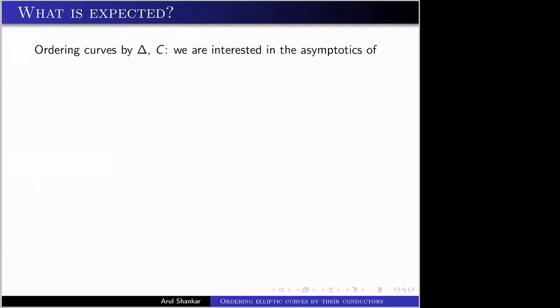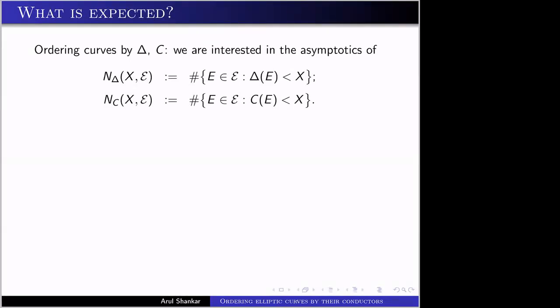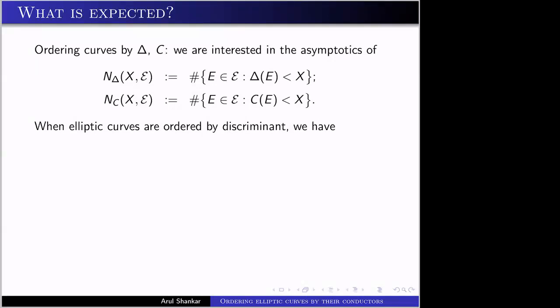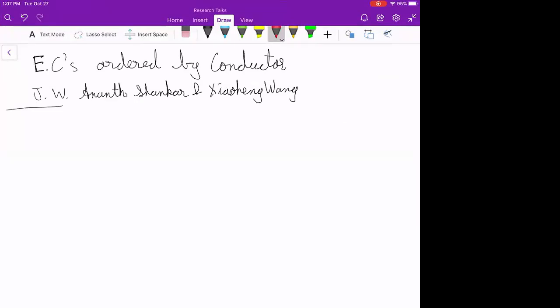Now I want to talk about what's expected. We're interested in studying the asymptotics of the number of elliptic curves when ordered by discriminant: N_Δ(X) = #{E ∈ script E : |Δ(E)| < X}, and also N_C(X), the number of elliptic curves with conductor less than X. Let's start with N_Δ(X). If we graph the region |Δ(A,B)| < X in the (A,B)-plane, we get a non-compact set. This non-compact set contains infinitely many integer points, but they all lie on the discriminant-equals-zero locus. We remove those and count integer points with nonzero discriminant inside this region.